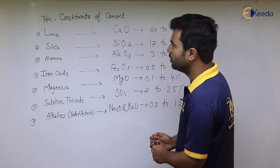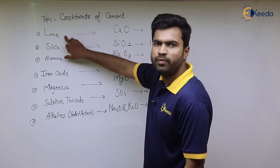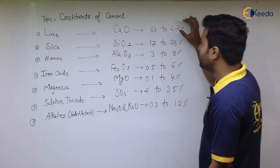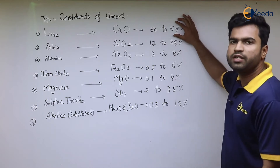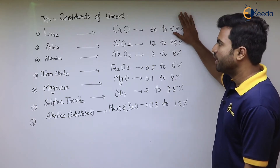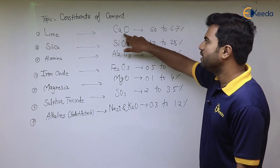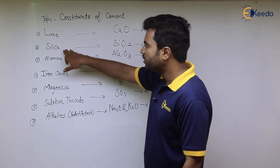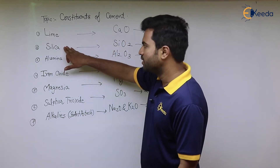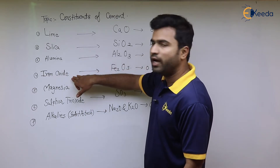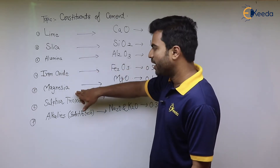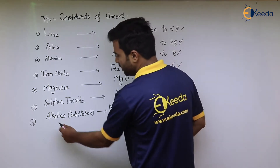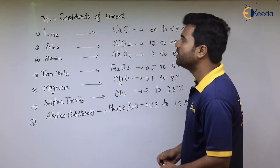The first constituent of cement is lime, and it has the highest percentage — 60 to 67 percent. Its chemical formula is CaO, that is calcium oxide. The second important constituent is silica, then alumina, then iron oxide, magnesia, sulfur trioxide, and lastly alkalis, that is soda plus potash.